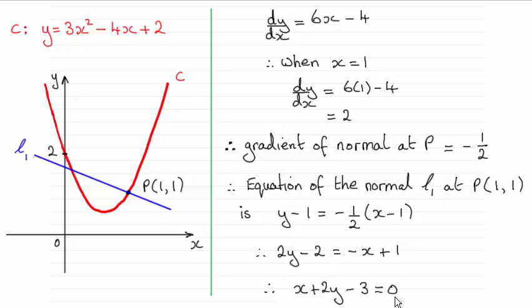So you can see the method that I've done, it's a basic method. We have the equation of the curve C, y equals 3x squared minus 4x plus 2.